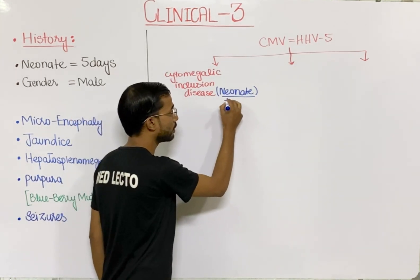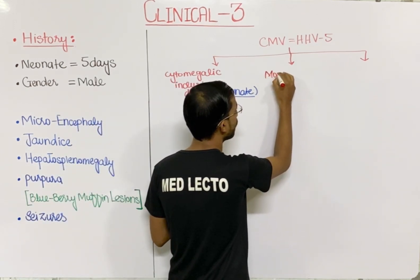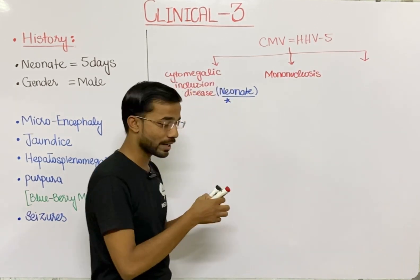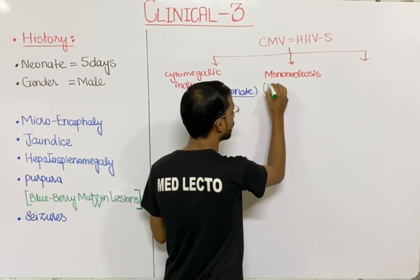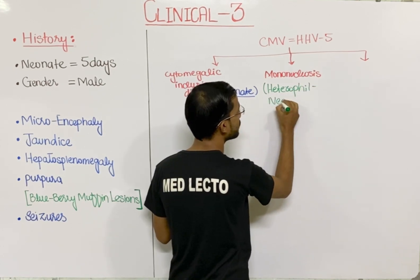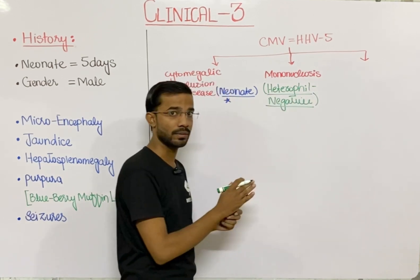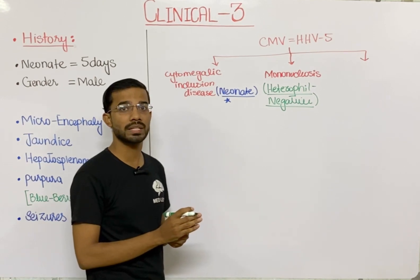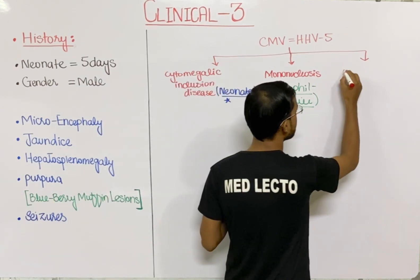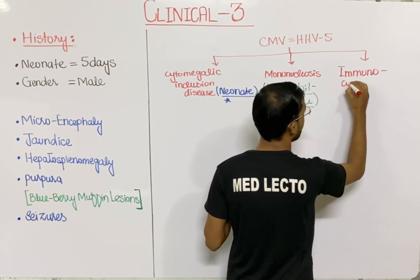CMV has three categories. The second category is mononucleosis, which is heterophil-negative — meaning the heterophil antibodies are negative for CMV. By contrast, the Epstein-Barr virus causes heterophil-positive mononucleosis. The third category is seen in immunocompromised patients.